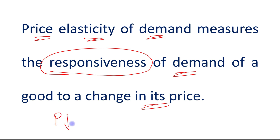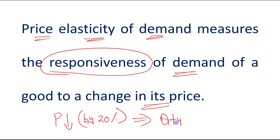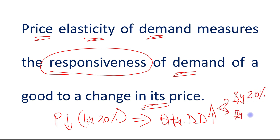For example, if we are saying that price fell by, let's suppose, 20% — we know that when price decreases, quantity demanded increases. But the question is, by how much more? If price fell by 20%, then quantity demanded increased. We don't know by how much — it may increase by 20%, it may increase by 70%, it may increase by 90%. So we know quantity demanded increased, but how responsive was it?